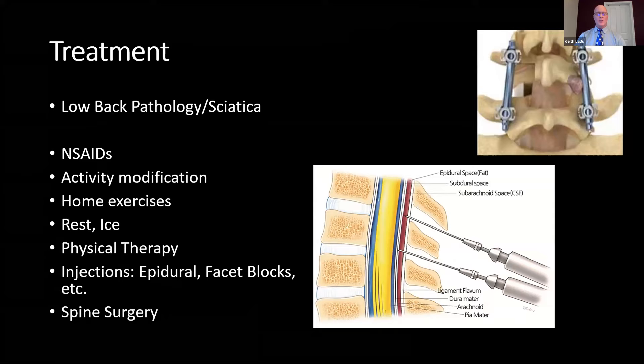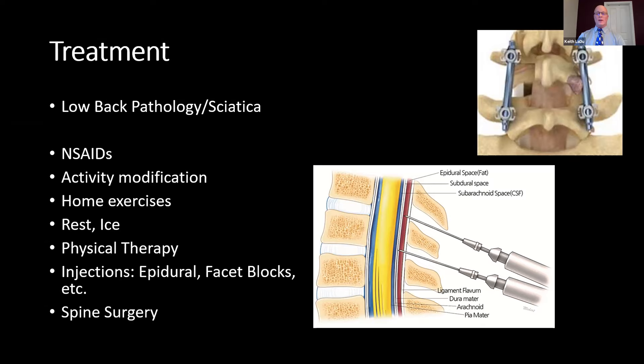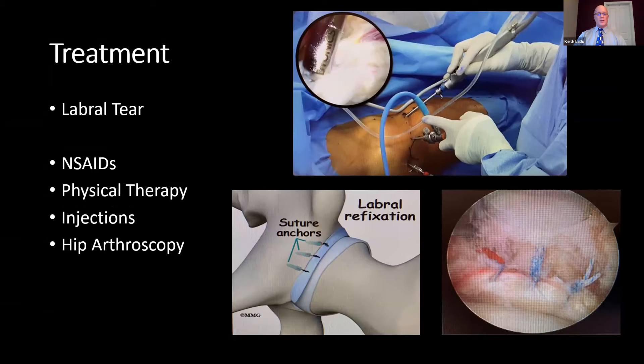Rarely surgery is needed for bursitis. For low back pathology and sciatica, similar treatment with activity modification, NSAIDs, home exercises, rest, ice, physical therapy, and then you can get into injections including epidural injections and facet blocks. If symptoms continue, ultimately spine surgery may be needed. For labral tears, start with NSAIDs and physical therapy. If symptoms continue, corticosteroid injections could be done. If there is a definite tear, a hip arthroscopy to do a labral repair can be performed.